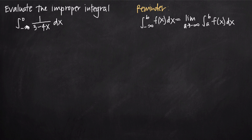This particular type of improper integral is what we call Case 2. Case 2 is the specific type of improper integral where we have negative infinity as our lower limit of integration and some constant — in this case 0 — as our upper limit of integration. There are 6 different cases, but in this video we're just talking about Case 2, which is negative infinity to some constant.